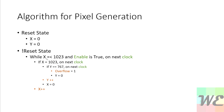So the nested loop reads: while x is less than or equal to 1023, if x equals 1023, on the next clock if y equals 767, overflow equals 1 and y equals 0. So when x was 1023 and then y became 767, we've drawn the whole frame — we've generated all the values for the whole frame. That's the circuit we're about to build.